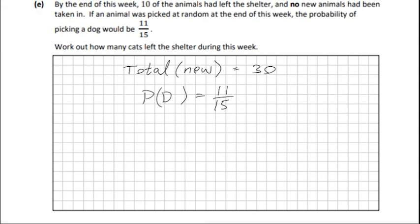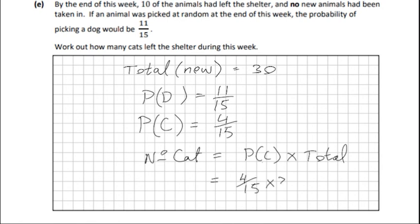So if the fraction is 11 out of 15 dogs then the probability of cats will be 4 over 15. And all we need to do is multiply by the total because remember it's a percentage or proportion. So the number of cats can be expressed like this. It's the probability of the cats multiplied by the total. And that would be 4 over 15 multiplied by 30. And I will give a result of 8 cats.